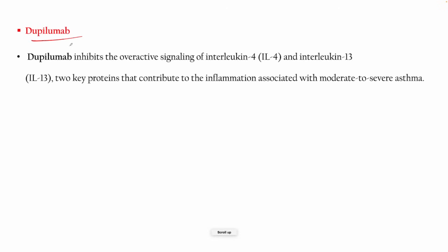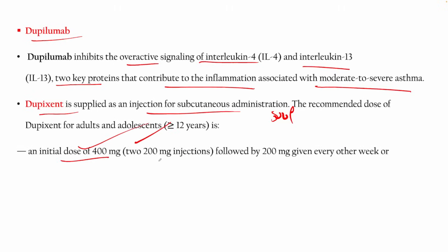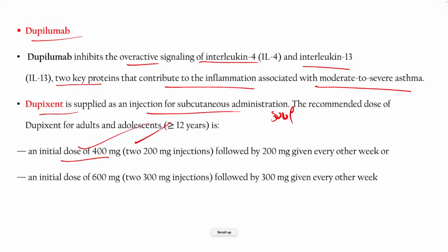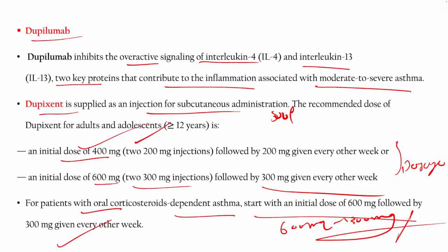Dupilumab inhibits the overactive signaling of interleukin-4 and interleukin-13 — two key proteins contributing to inflammation in moderate-to-severe asthma. It is applied as a subcutaneous injection (Dupixent). In adults or adolescents, the initial dose is 400 mg (two 200 mg injections) every 2 weeks, or an initial dose of 600 mg (two 300 mg injections) followed by 300 mg every other week.